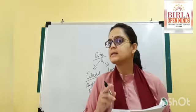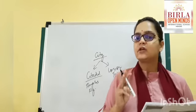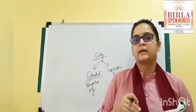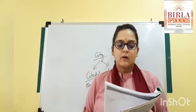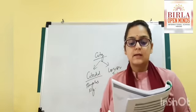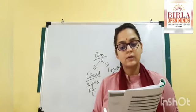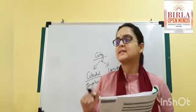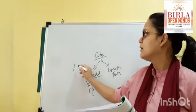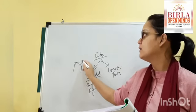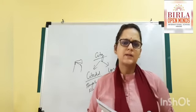One city of the Harappan civilization had three parts — that was Dholavira. The Citadel was located to the west, built on a raised hill. The Citadel was always built on a raised hill.